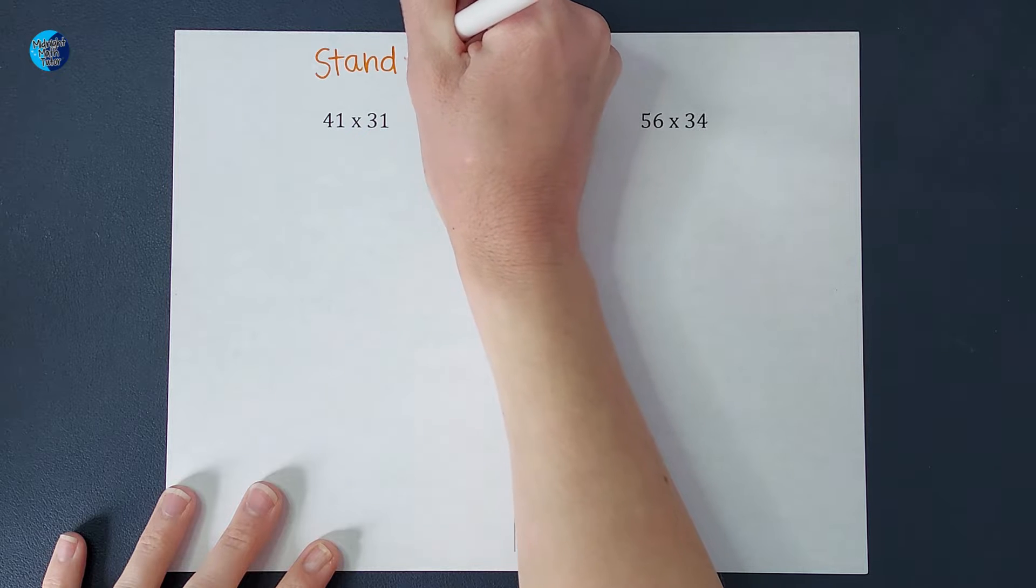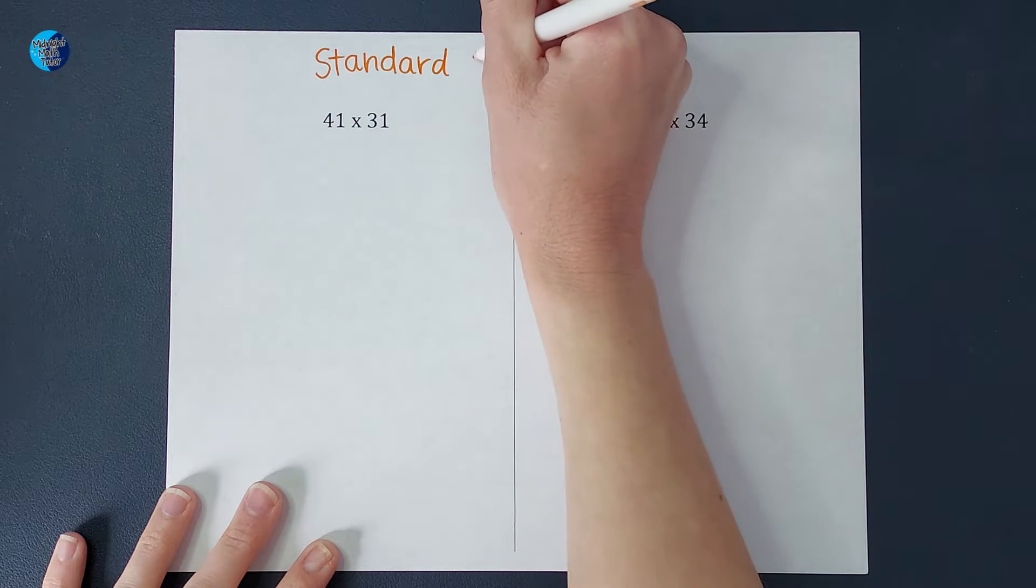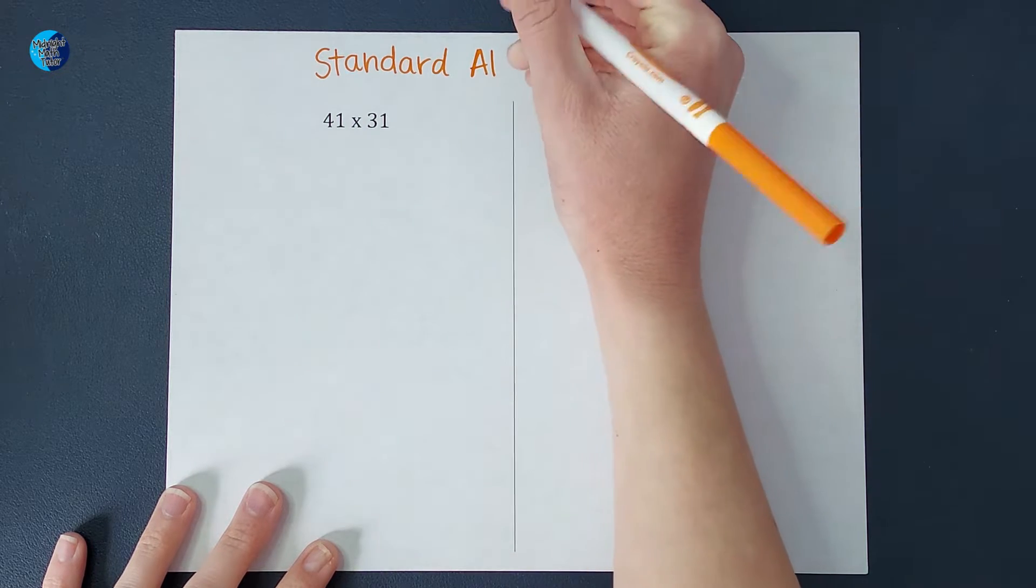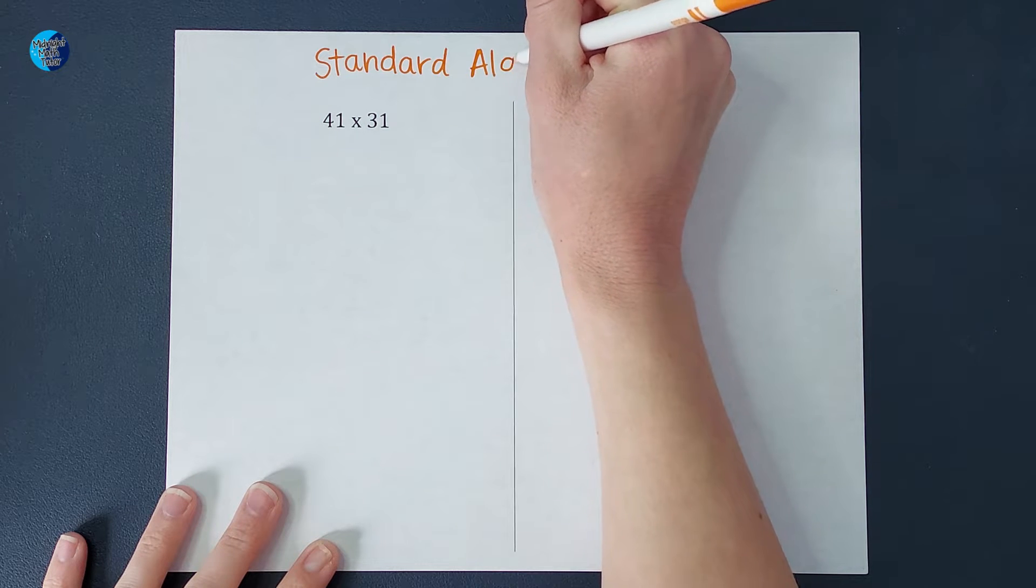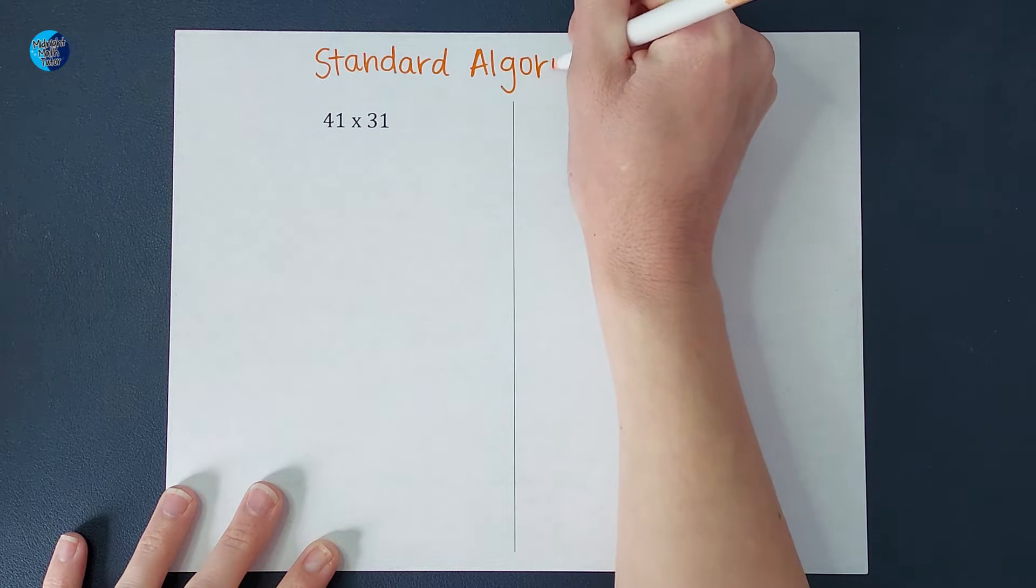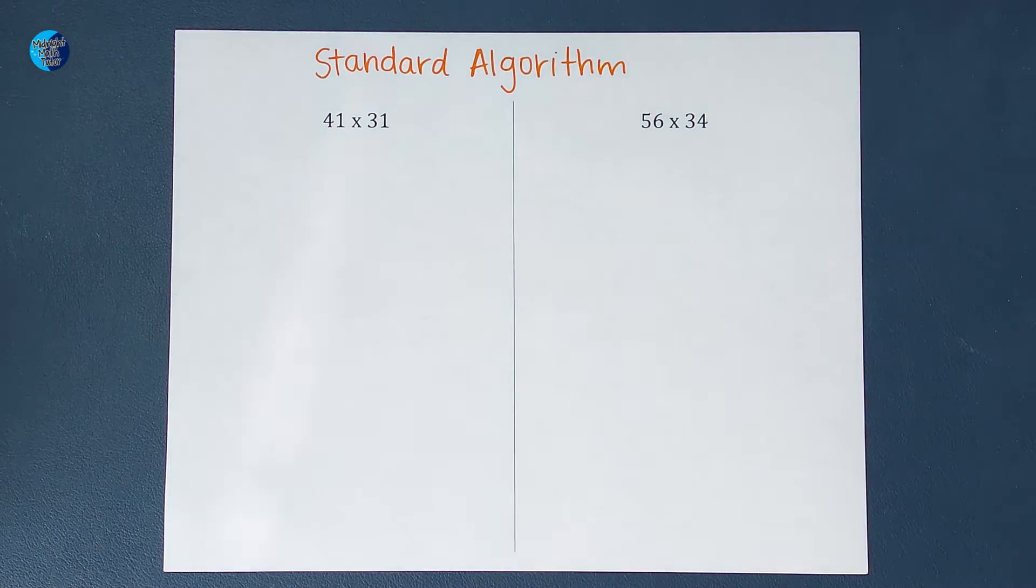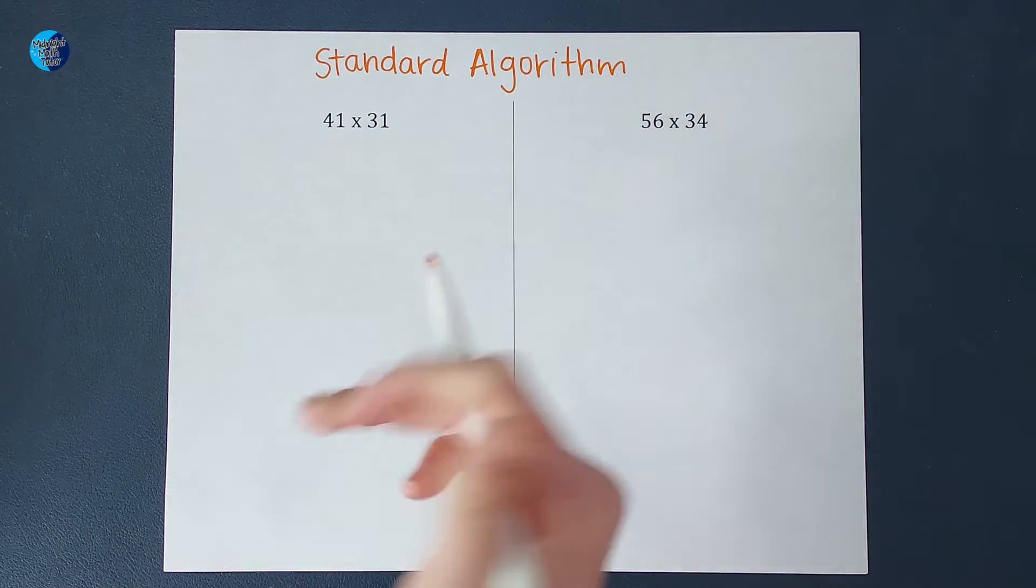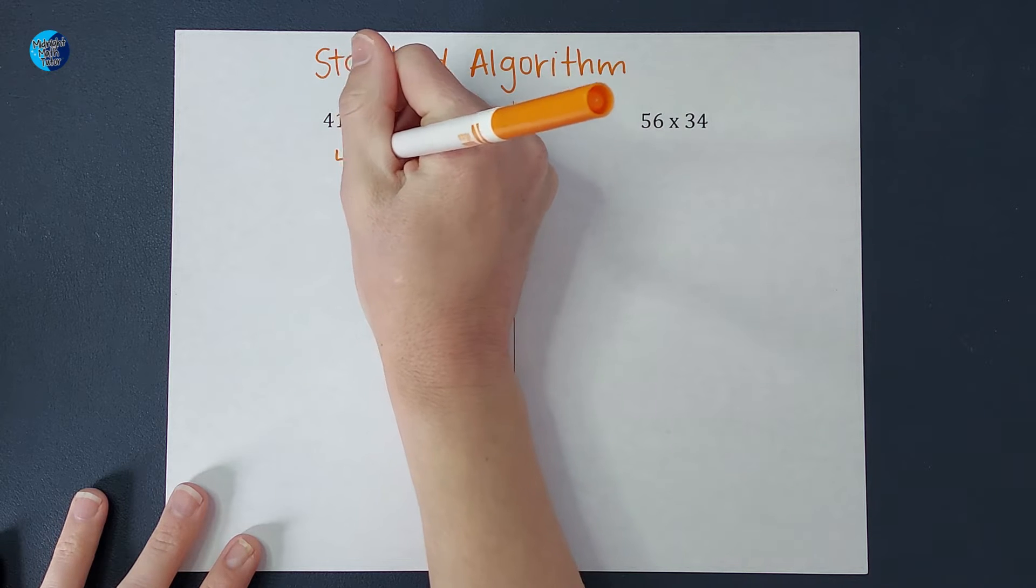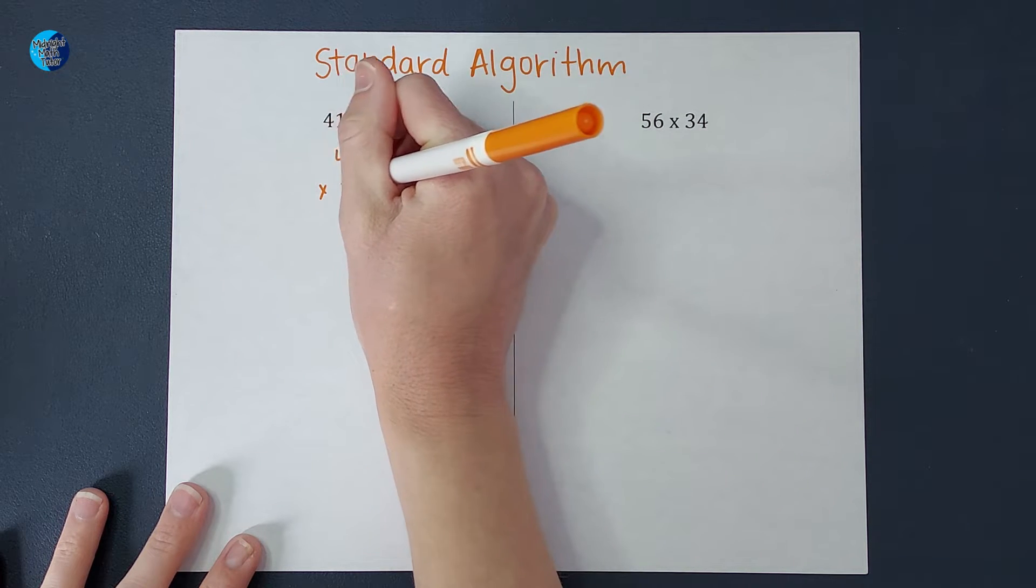This is the way I was taught, and it's, at least for now, probably the most common way, but that could change. We'll see. All right, so here's our standard algorithm. So to multiply these, I'm going to write them one on top of the other. So I'm going to do 41 times 31.